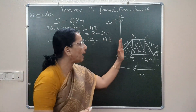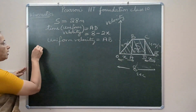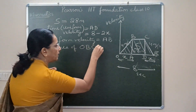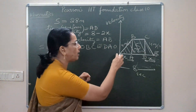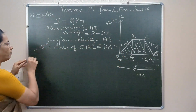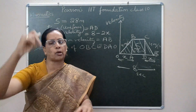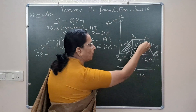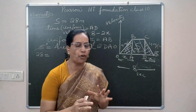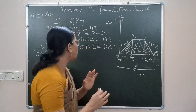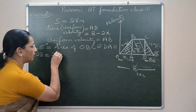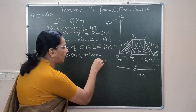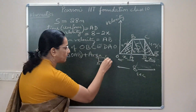Using the concept that the area under the velocity-time graph gives total distance traveled, the area of the complete shape OBCEDA equals 28 meters. This total area equals twice the area of triangle OAB plus the area of rectangle ABCD. Since acceleration and deceleration are both uniform, the two triangular areas are equal. So: 2 × (½ × base × height) + (length × breadth) = 28. Here the base of each triangle is X, the height is AB, and the rectangle has length AD = 8 minus 2X and breadth AB.